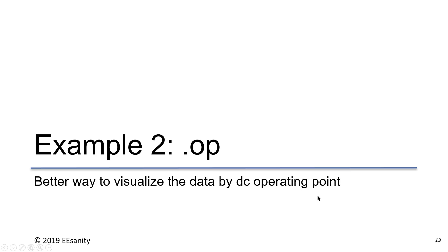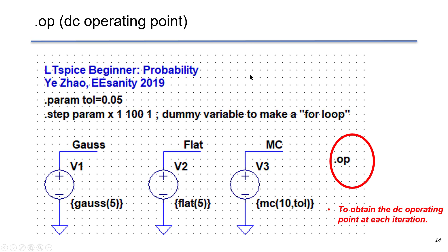This is the second example. We use .op, the DC operating point, to better visualize the data. So we have the similar setup, the parameter, and the step function. But here, we use .op. So it gives the DC operating point at each iteration, which makes the simulation much easier and quicker.